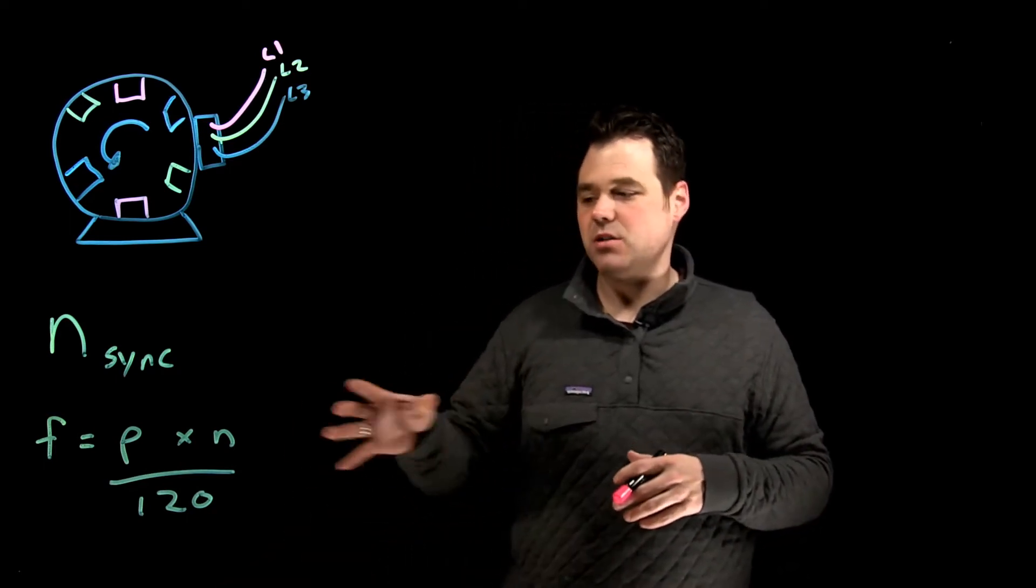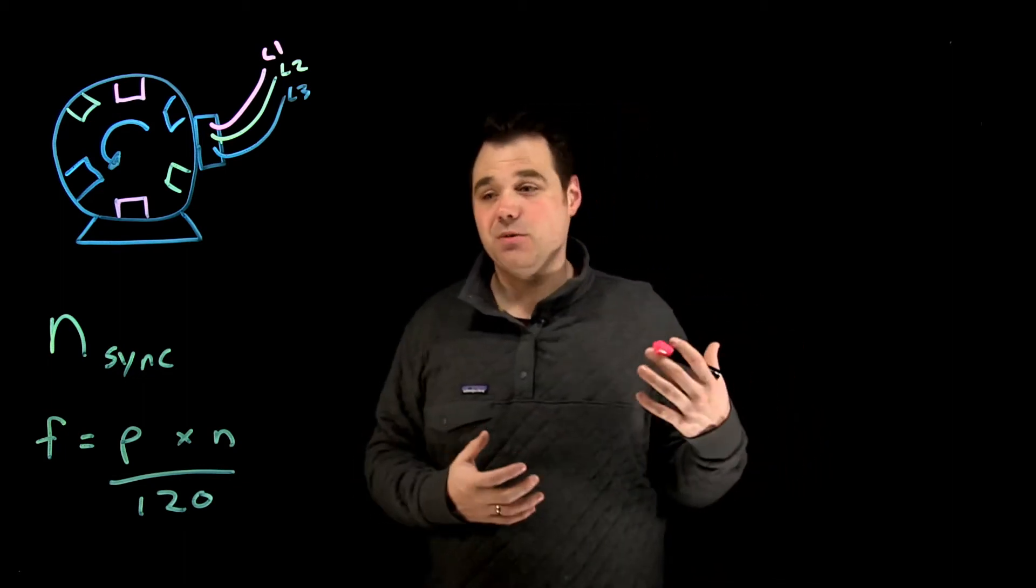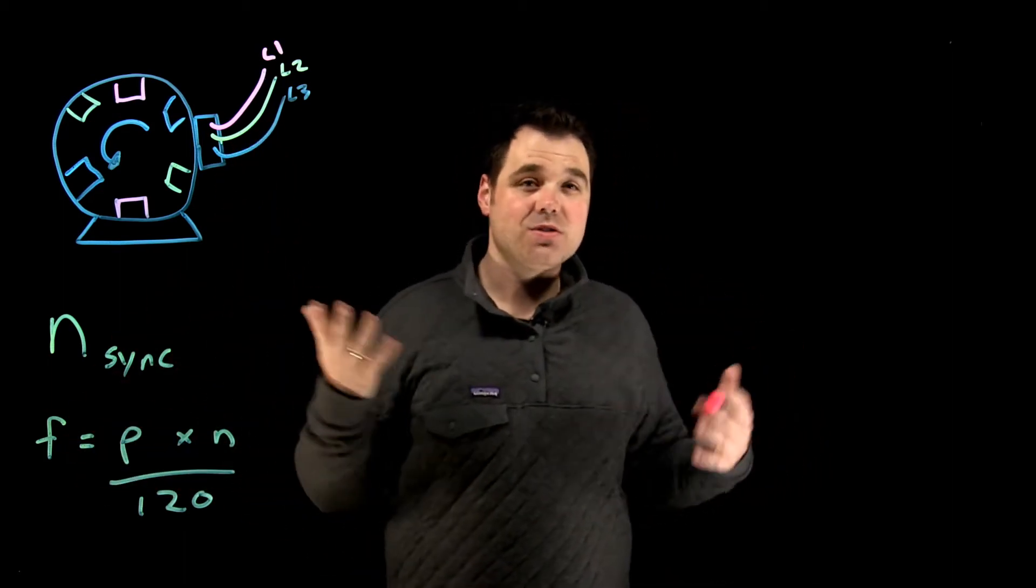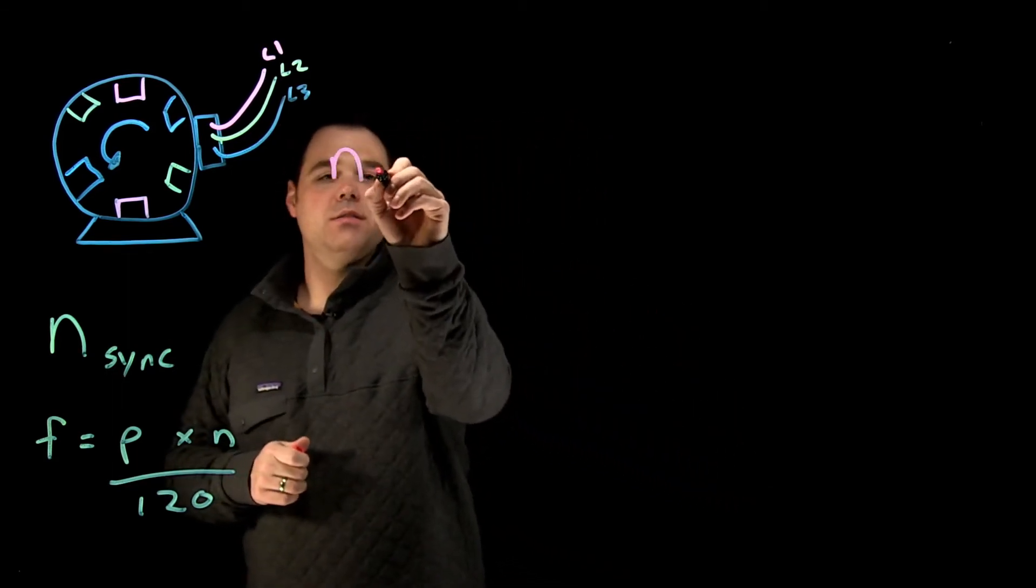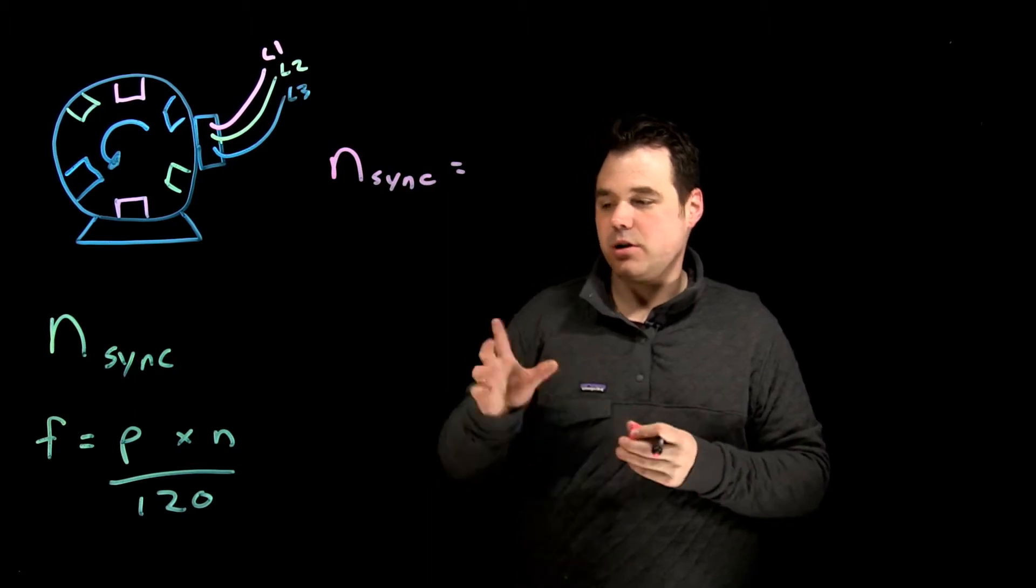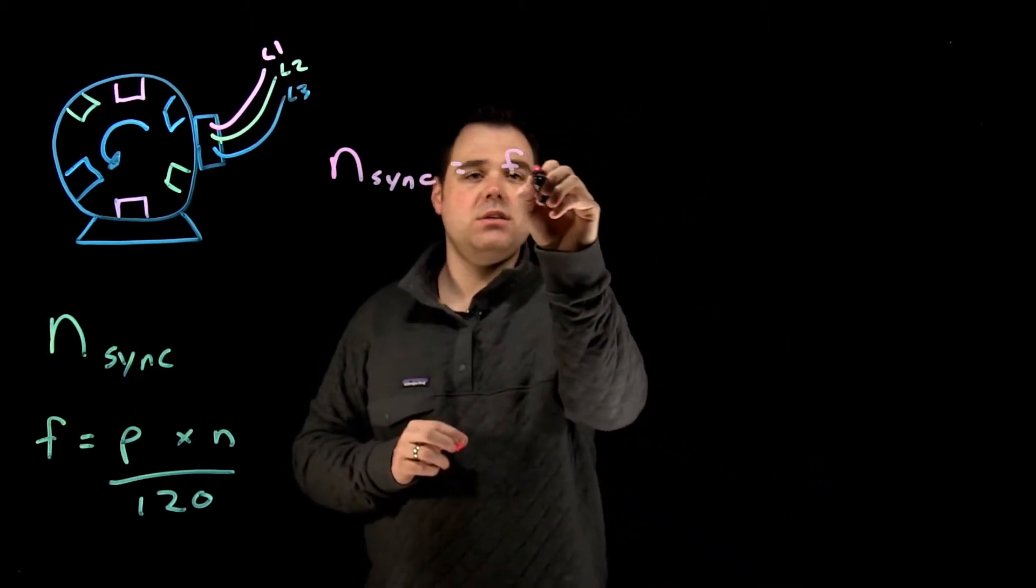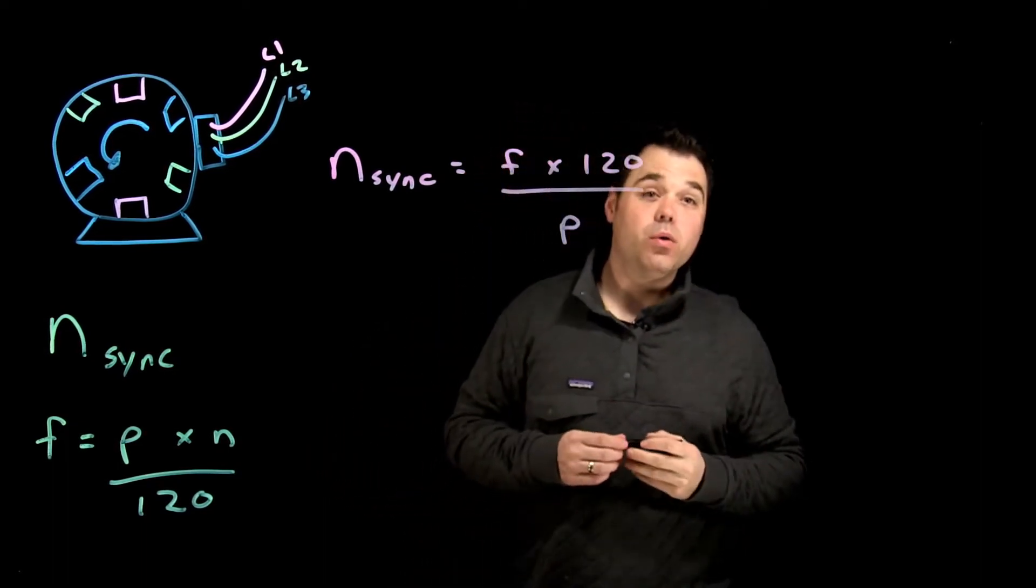Now what we're talking about is we're going to use this same formula, only we're going to transpose it. We're going to have a set frequency because we're connected to a source, so we're going to talk about 60 hertz. So we're going to take that formula—n sync equals frequency times 120 divided by the number of poles.